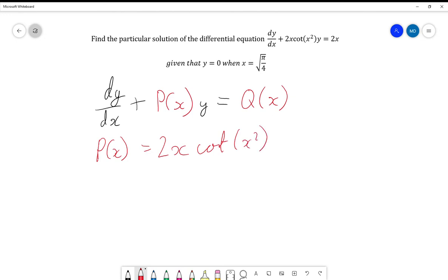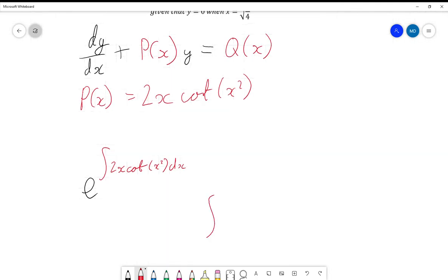So what we need to do is we need to do the integral e to the power of the integral of 2x cot(x²)dx. Obviously we'll ignore that e for now and we will just focus on the 2x cot(x²)dx.